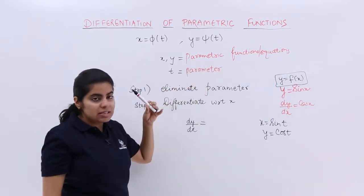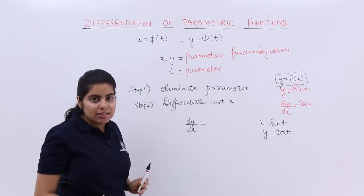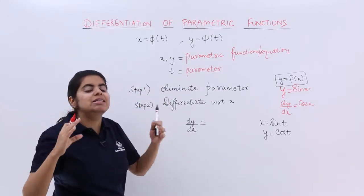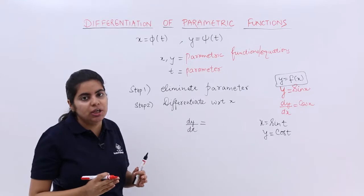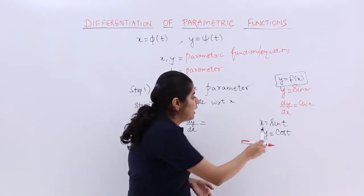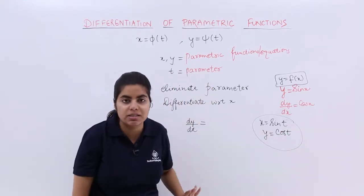Now x and y are something of this sort, t is called as the parameter. Now my concern is how to differentiate such kind of questions. What will be dy by dx for this question? That is my concern.